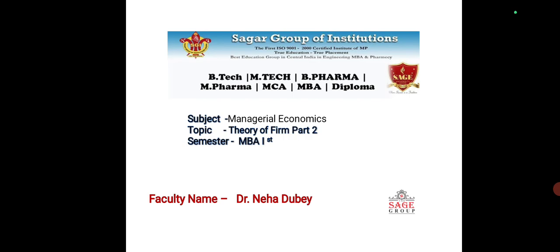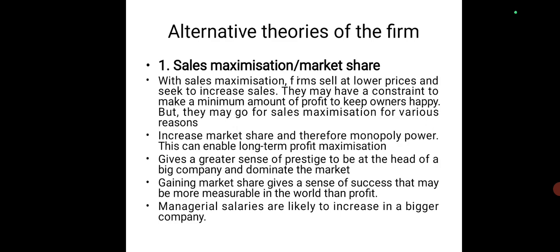What is the traditional theory of firm? It is talking about information symmetry in all the firm. It is considered as a homogeneous unit. Marginal analysis is the basic tool and the ultimate goal of the firm is profit maximization. The traditional theory has certain loopholes, so modern economists developed the alternative theories of the firm.